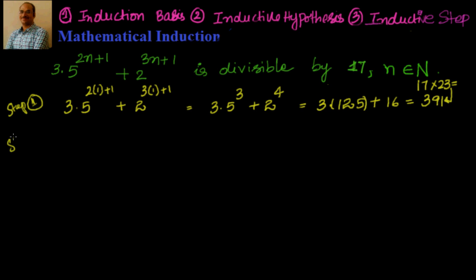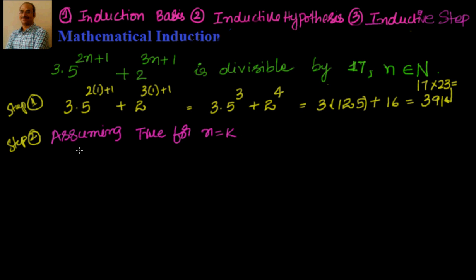In step 2 we assume it's true for n equal to k. Substituting k, we assume that 3 into 5 to the power of 2k plus 1, plus 2 to the power of 3k plus 1, is divisible by 17. This is the inductive hypothesis.